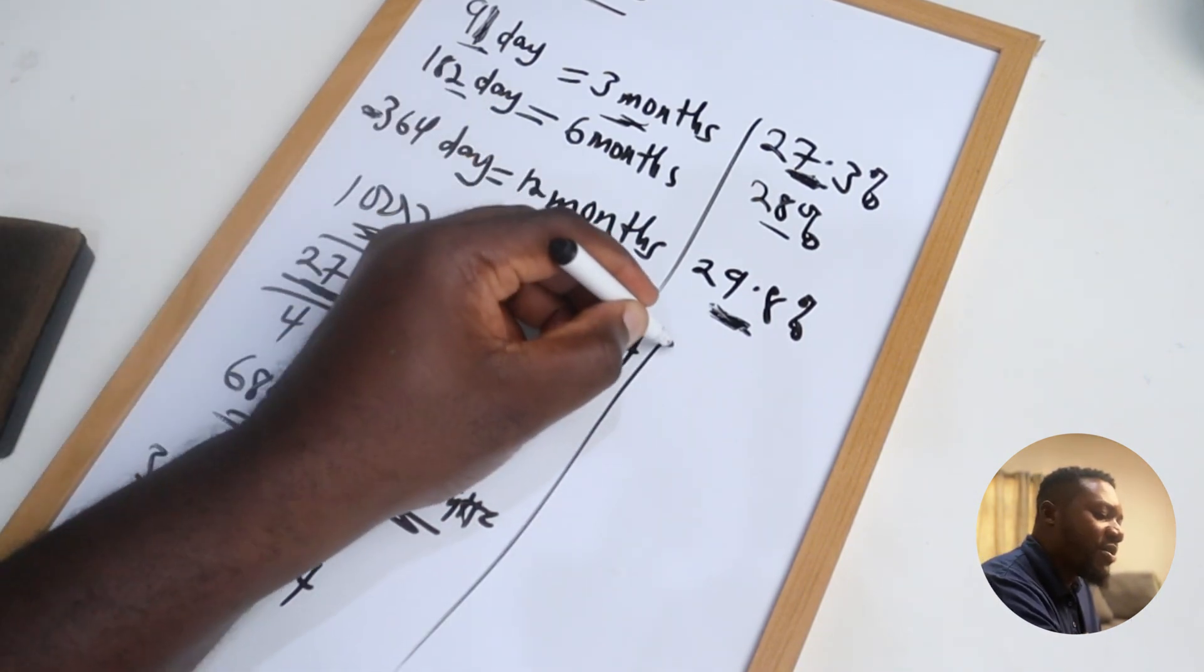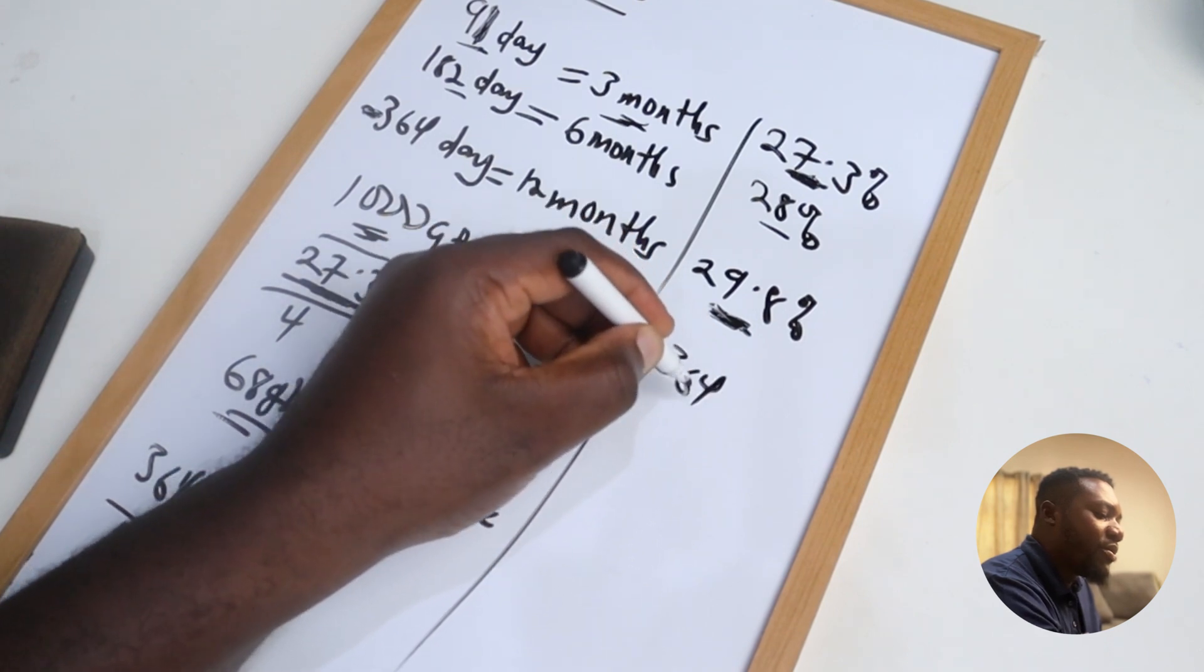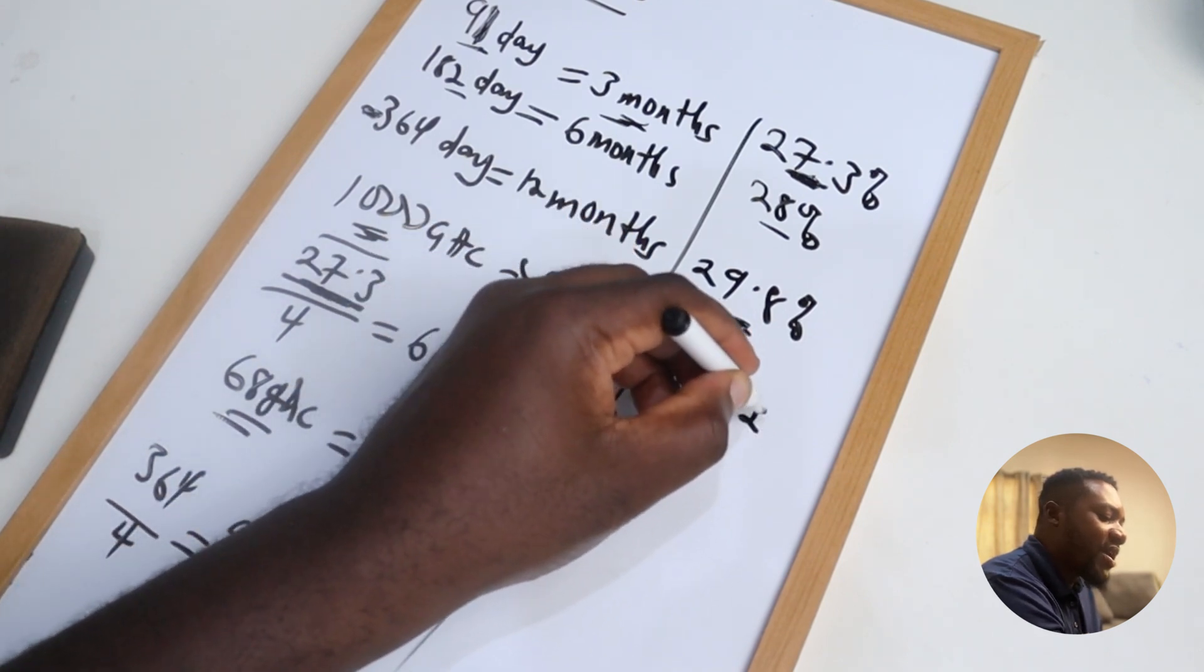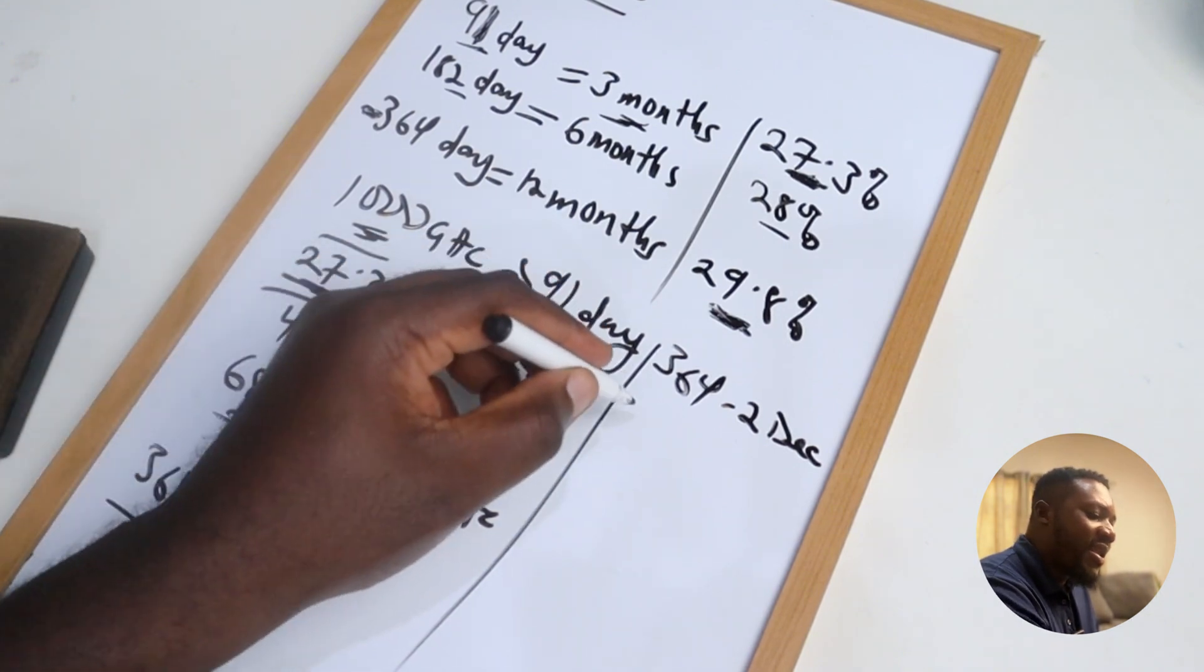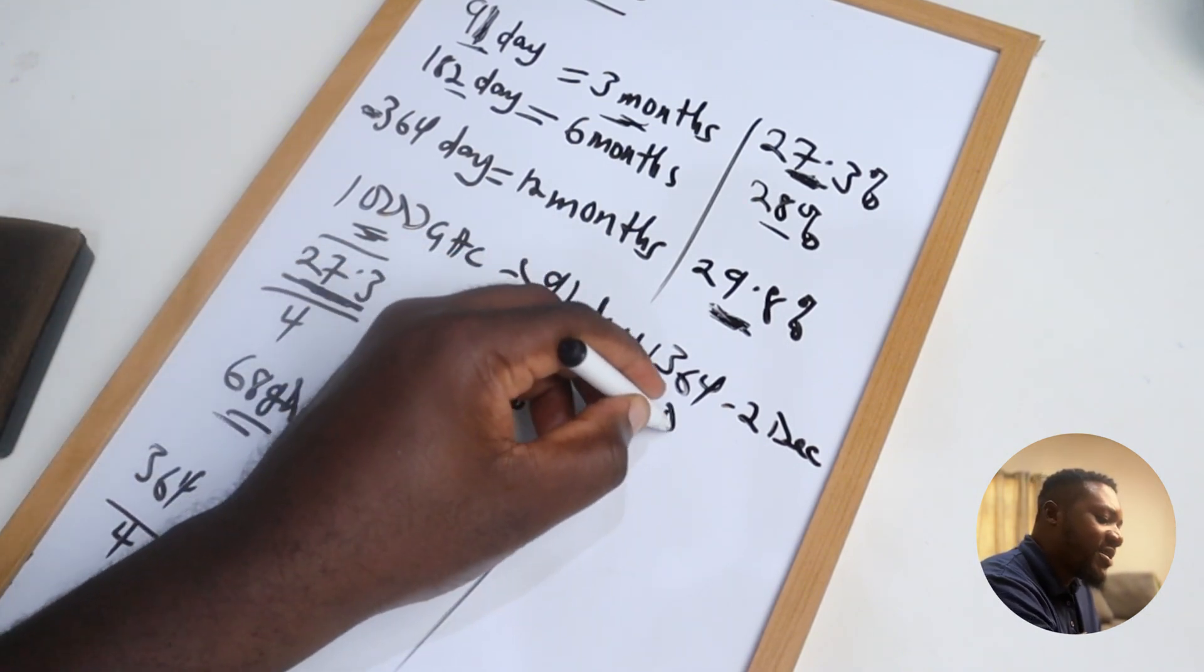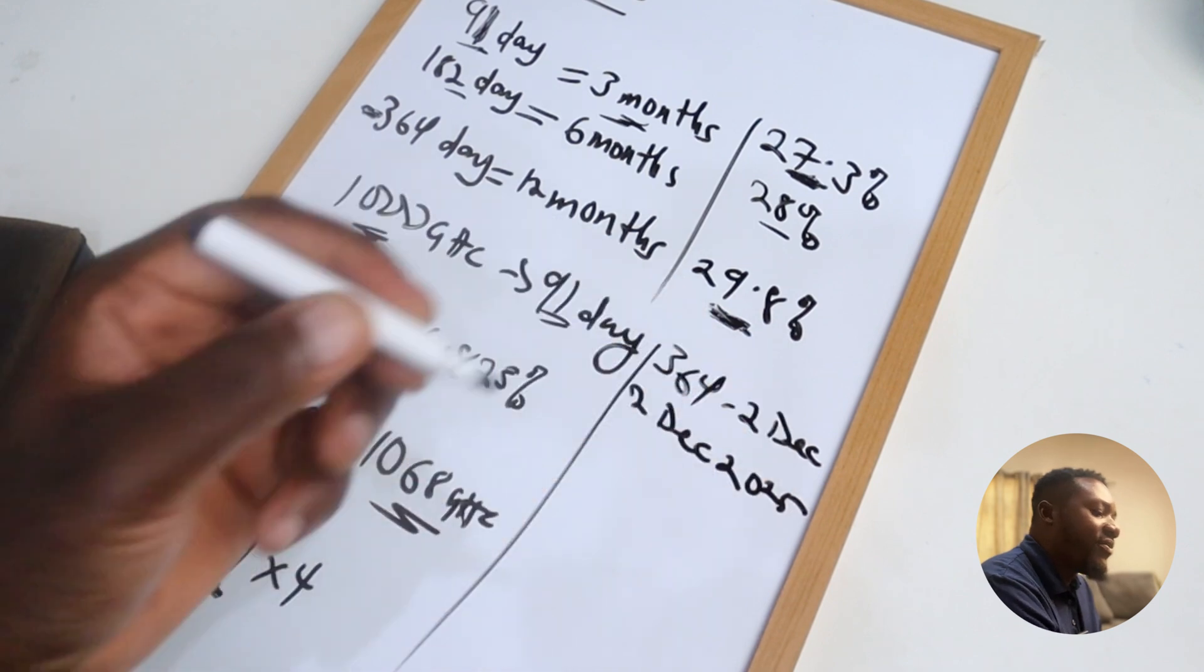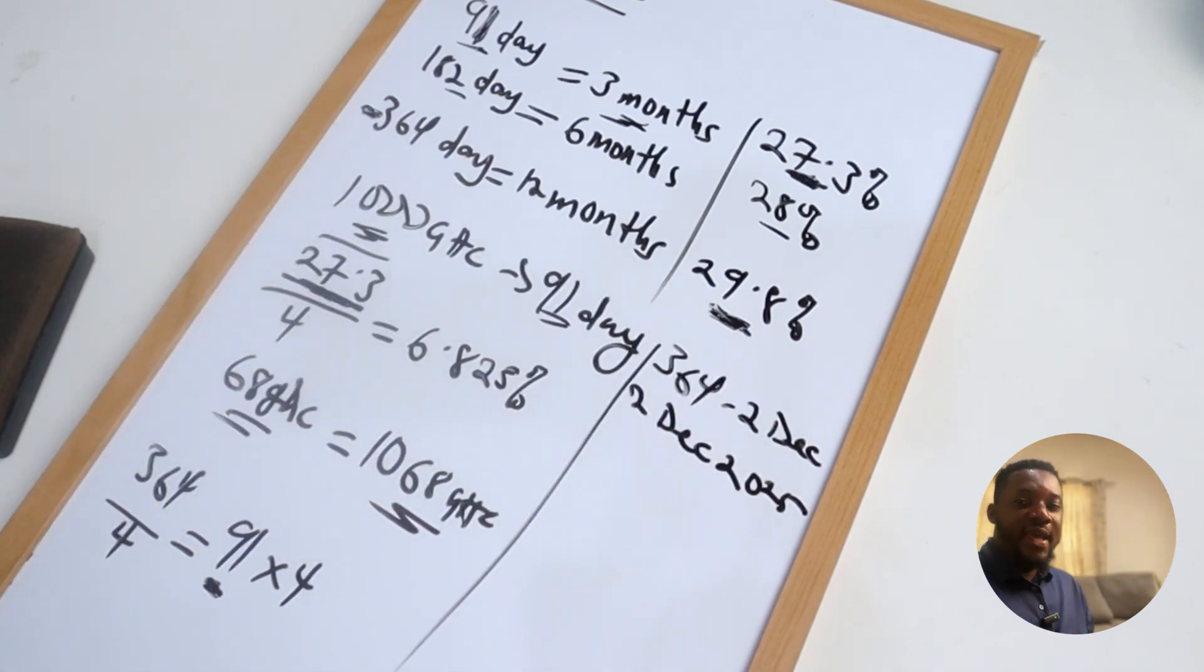So let's say for example I go and then I purchase a 364 day bill today, which is 2nd December. I'm going to get it again next year, 2nd December 2025, that's if the auction even gives me the bill today. So it's going to take one whole year for me to get it.